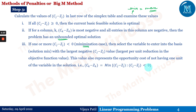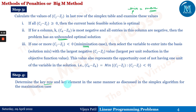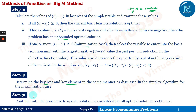Step four: determine the key row and key element in the same manner as discussed in the simplex maximization method. Step five: continue with the procedure to update the solution at each iteration until the optimal solution is obtained. This Big M method is essentially the same as the simplex method we have already discussed; the only change is the introduction of the penalty coefficients plus M or minus M.